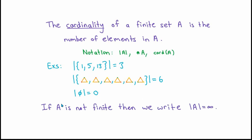For the purposes of these lectures, if A is not a finite set, then we're just going to say that its cardinality is infinite, and write absolute value of A equals infinity. Many of you probably know that there's a finer notion of cardinality that you can use to distinguish between certain infinite sets, but that's not really the focus here, so we'll just stick with simply saying that infinite sets have infinite cardinality.